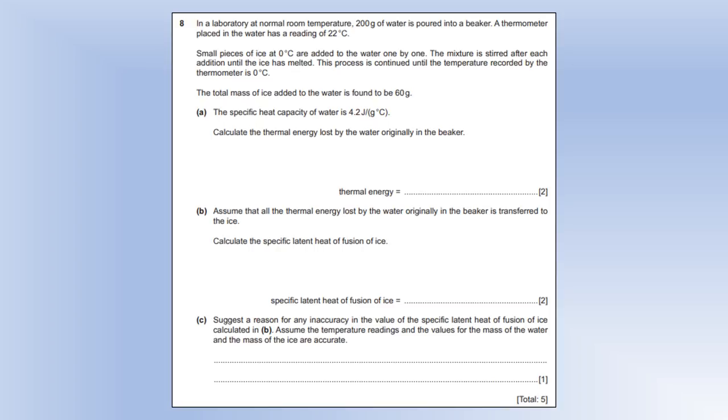So in a laboratory at a normal room temperature, we've got 200 grams of water poured into a beaker. A thermometer is placed in the water. It has a reading of 22 degrees Celsius. Very typical room temperature. Small pieces of ice at zero degrees are added to the water one by one. The mixture is stirred. You stir it because that means the temperature of the water is pretty uniform throughout. And after each addition of ice until the ice melts. The process is continued until the temperature recorded by the thermometer is zero degrees Celsius. The total mass of ice added to the water is found to be 60 grams. The specific heat capacity of water is 4.2 joules per gram.